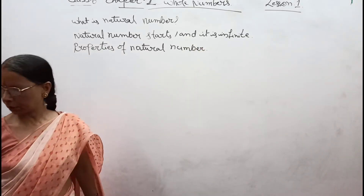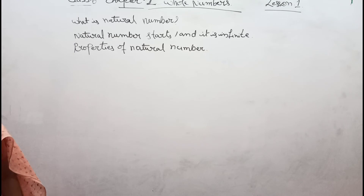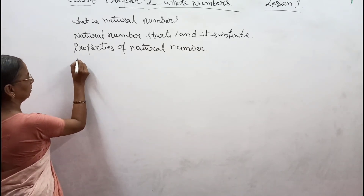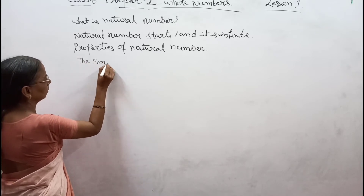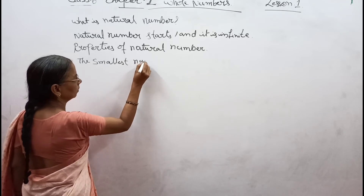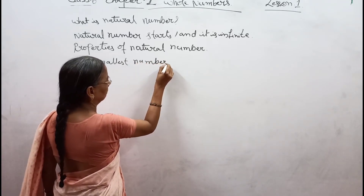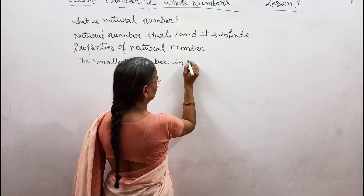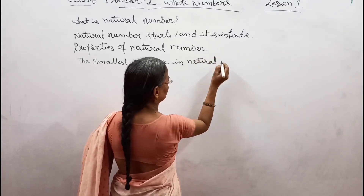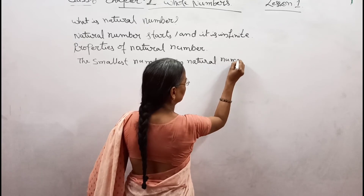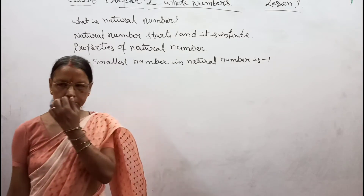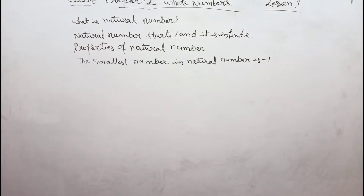Properties of natural number. The smallest number is 1, and there is no largest number.